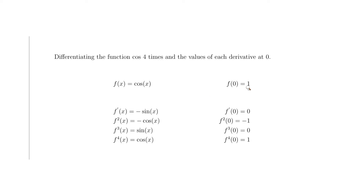First, the function: cosine of zero equals 1. Next, the first derivative of cosine is minus sine, and minus sine of zero equals zero, so the first derivative at zero is zero.